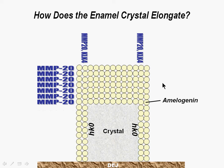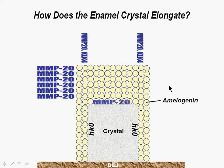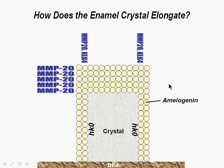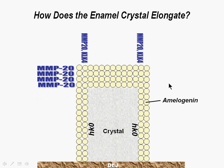The crystal will interact with another layer of amelogenin and change their structure to start another cycle of growth. Protein binding, crystal growth, and enzymatic removal cycles will be needed for continuous and dynamic crystal growth.